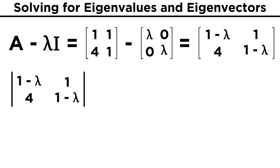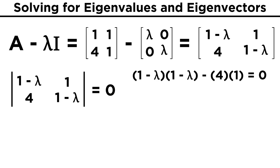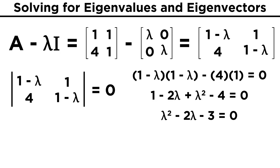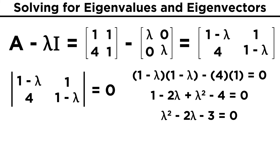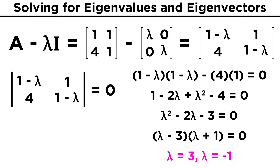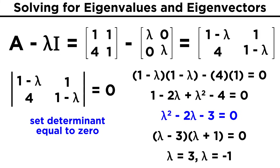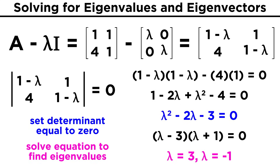Now we must take the determinant of this matrix and set it equal to zero. The determinant will be (1 minus lambda) times (1 minus lambda) minus four times one. Foiling out this first term leaves us with one minus two lambda plus lambda squared minus four. Simplifying and setting this equal to zero gives us the characteristic equation lambda squared minus two lambda minus three equals zero. We can factor this as (lambda minus three)(lambda plus one) equals zero, giving us eigenvalues of three and negative one.